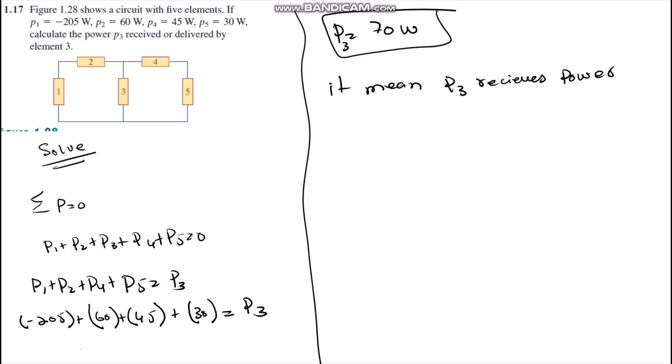Hello everyone, today we are going to solve question number 1.17. The question is Figure 1.28 shows a circuit with 5 elements which are 1, 2, 3, 4, 5. In the question, the power of all elements are given except element 3. The question is demanding to find the power of element 3 and also identify whether power is either receiving or delivering.